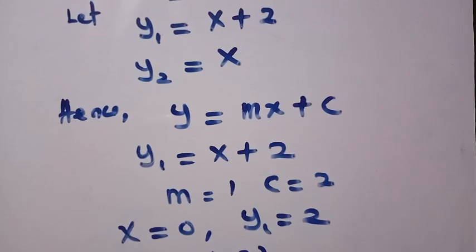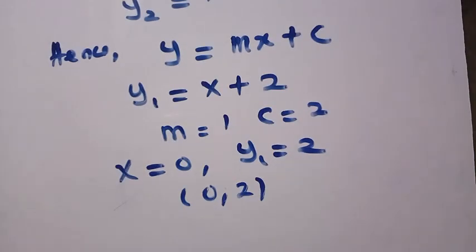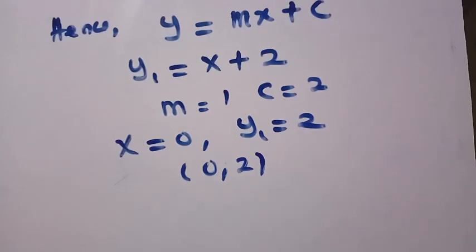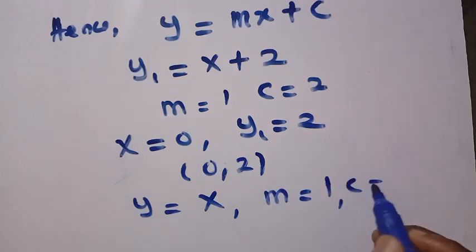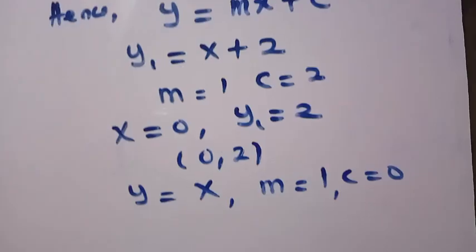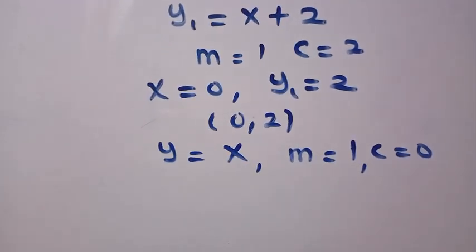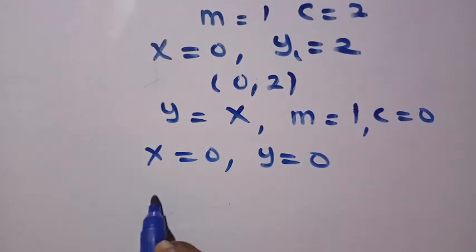And for the other equation here, as y equals to x. For y equal to x, this also shows that m here equals to 1. And there is no slope, it means c equals to 0. If c equals to 0, then we are going to have the coordinate of this at x equals to 0. Therefore, y also equals to 0. For the coordinate, we have 0 comma 0.